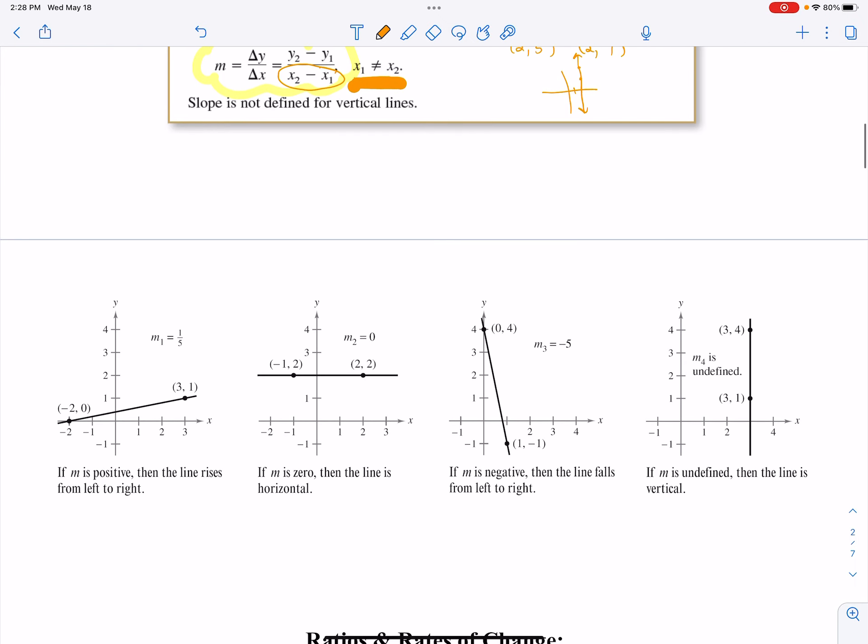Now I have just real quick here, a picture of four different graphs and reviewing how we read them. We always read from left to right. So as I look at this first graph here, that goes from the point negative two, zero up to the point three, one, we would say that the slope of that line is positive because it is rising as you read from left to right.